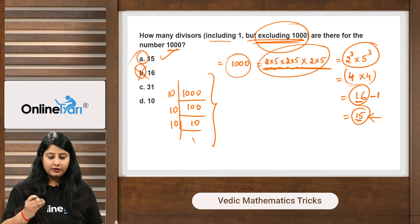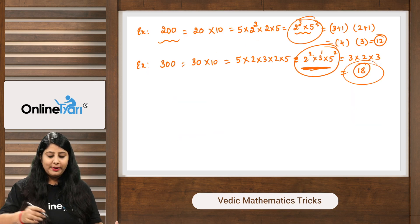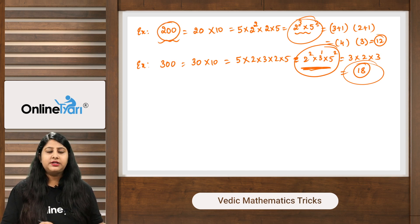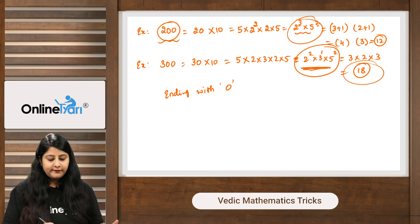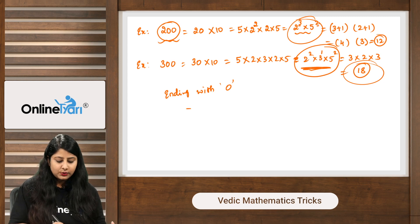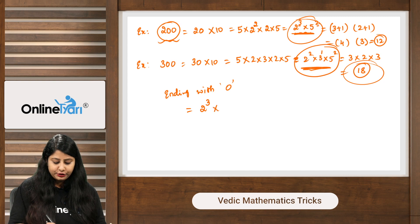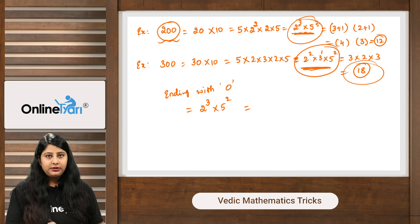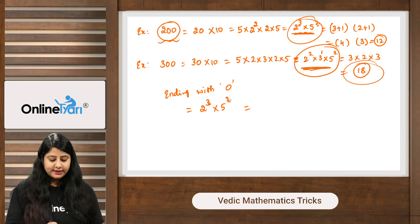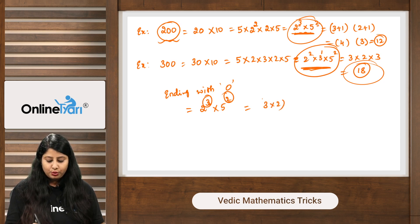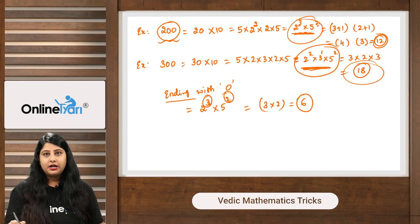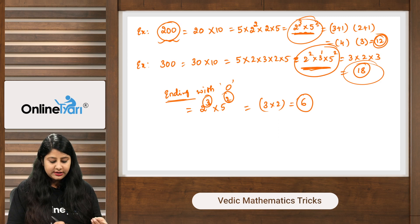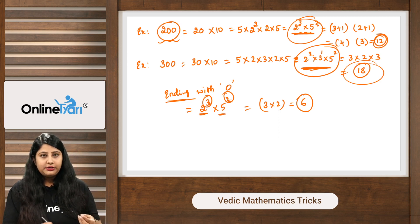There is one more question type: 'How many factors of 200 are ending with 0?' For this, you should NOT add 1 to the powers of 2 and 5. For 200 = 2³ × 5², just multiply the powers as they are: 3 × 2 = 6. So 200 has 6 factors ending with 0, out of its 12 total factors.